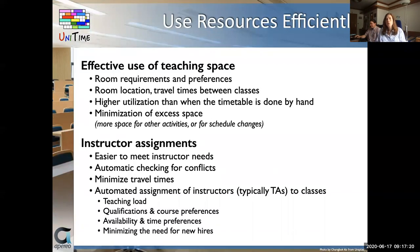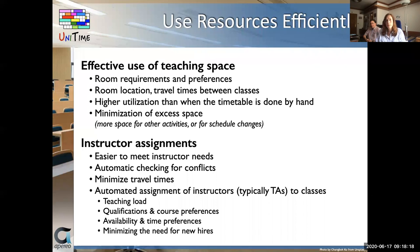The first item was to use resources more efficiently. By resources, we mean rooms with their equipment, but not only rooms — instructors can also be viewed as limited resources. Unitime helps to better meet requirements and preferences for rooms or room equipment and takes into account travel times between locations. Institutions using Unitime could utilize their rooms better than when timetabling by hand. For example, a college of sports could stop renting a sports facility because they fit within remaining facilities. For instructors, Unitime helps meet their restrictions and preferences, automatically checks for conflicts, and can minimize travel between different buildings.